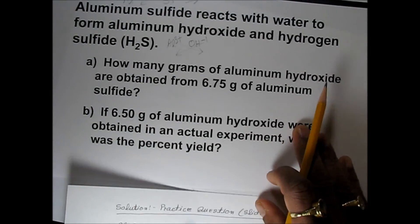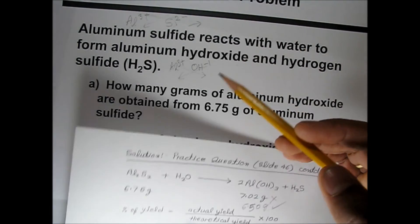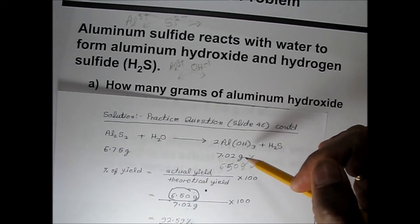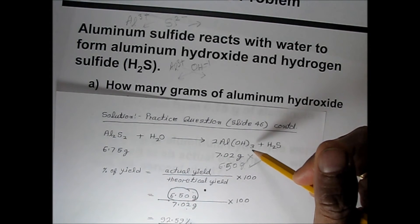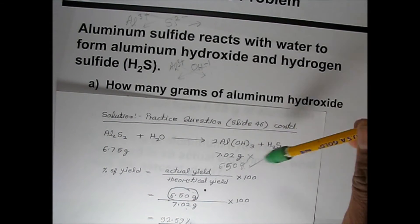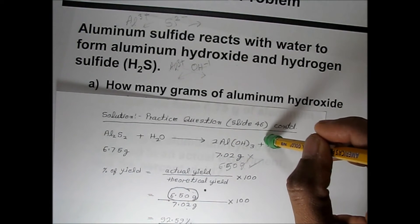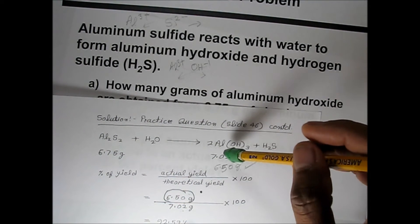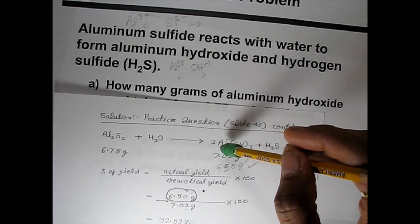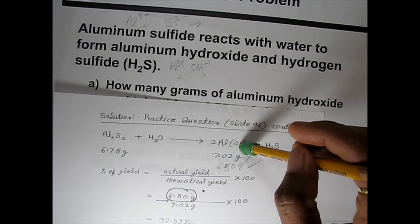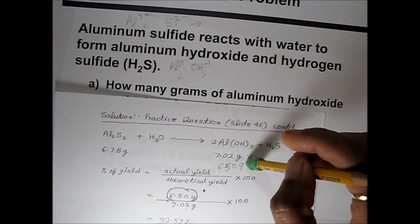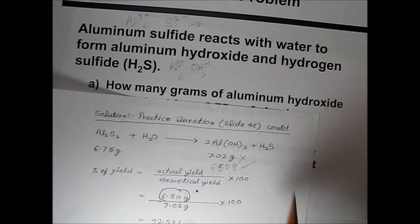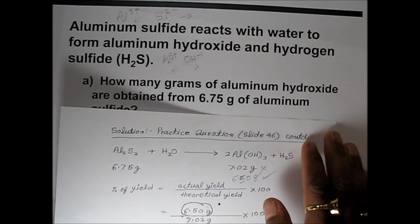This was the complete answer for this question: aluminum sulfide reacts with water forming aluminum hydroxide and H₂S gas. We found the gram quantity of product formed, and then calculated that if we are getting only 6.50 grams instead of the theoretical 100%, the percentage yield is 93%.